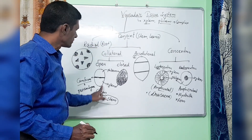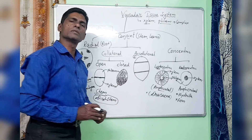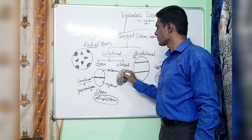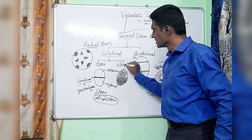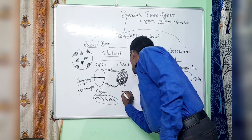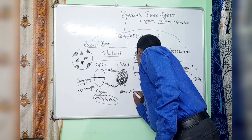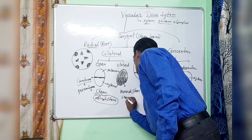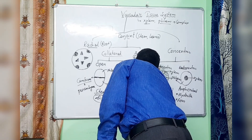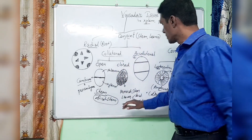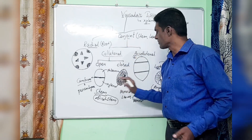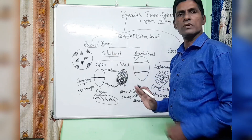Open type vascular bundles are absent in monocot stem because secondary growth does not occur in monocot stem. The phloem tissue is above and xylem is below. Closed collateral conjoint vascular bundles are found in both monocot stem and leaves — both dicot and monocot leaves, i.e., dorsiventral and isobilateral leaves — both consist of closed collateral conjoint type of vascular bundles.